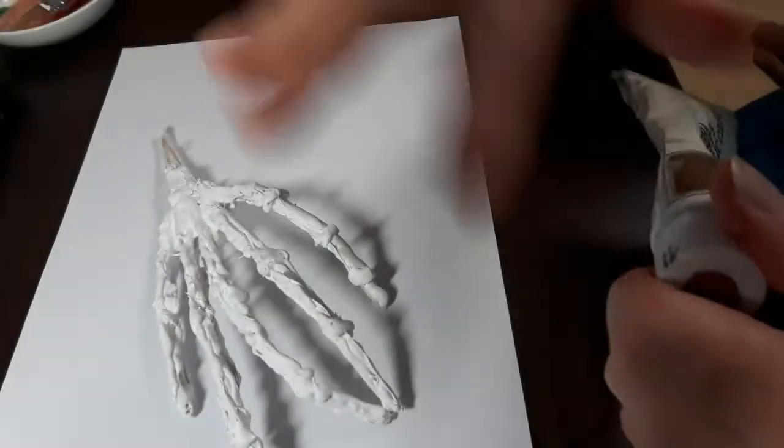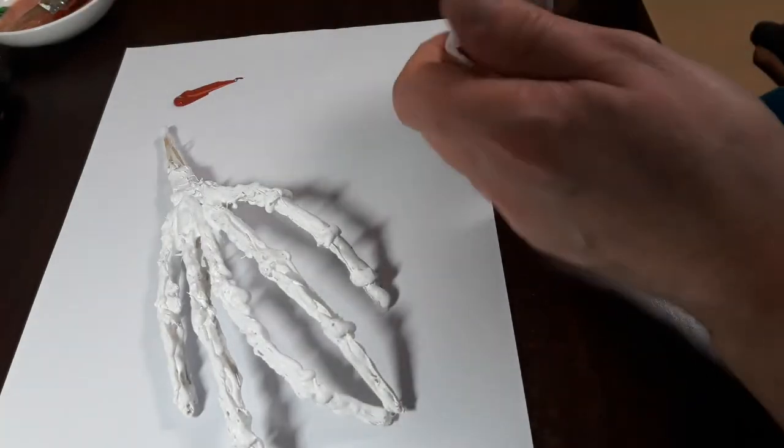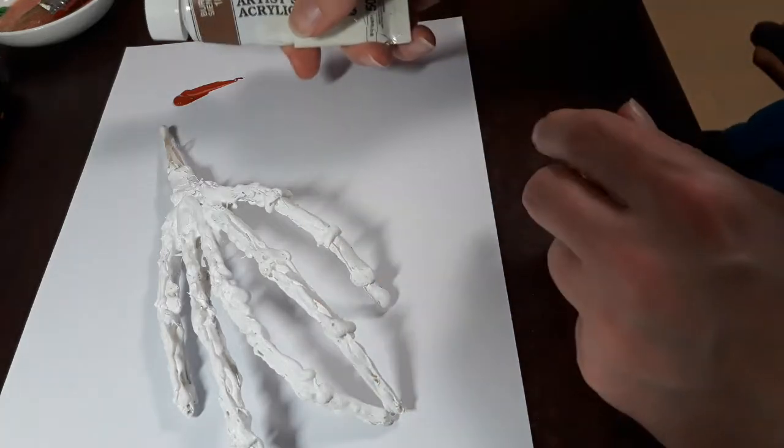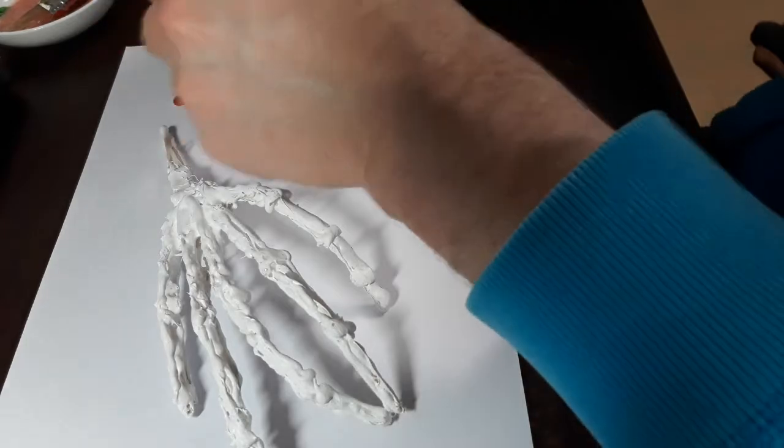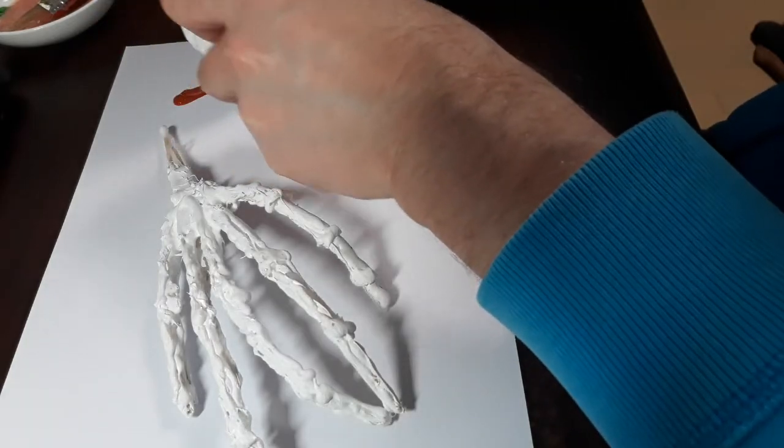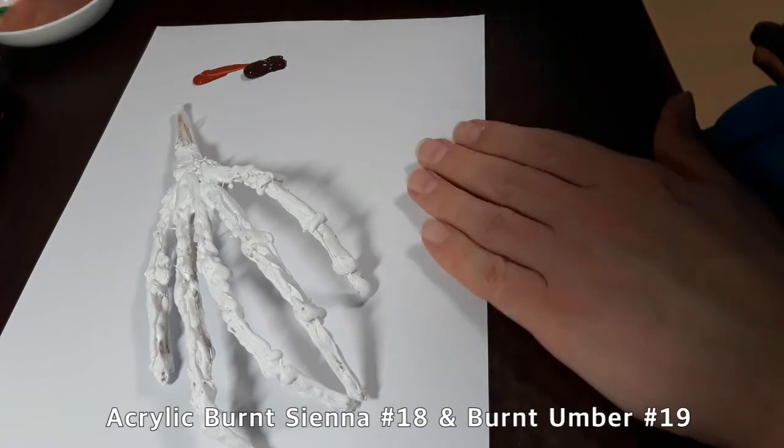If you want to know how to age this and make it look like it's flesh and something out of a catacomb, you'd use a burnt sienna number 18. I'm using an alpha color, just a dab,